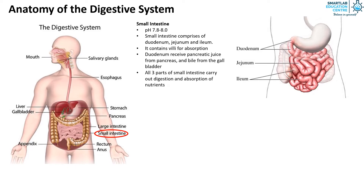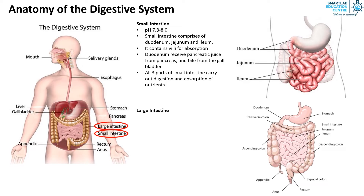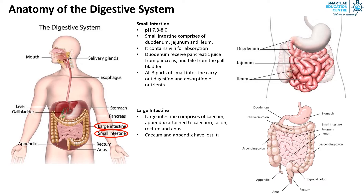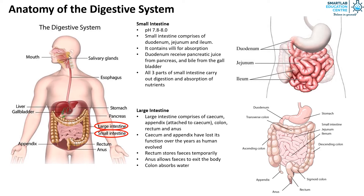Lastly, we have the large intestine. It comprises the cecum, the appendix which is attached to the cecum, the colon, rectum, and anus. The cecum and appendix have lost their function over the years as humans evolved. The rectum stores feces temporarily, and the anus allows feces to exit the body. The colon absorbs water and mineral salts from undigested food material.